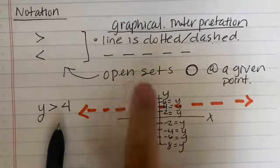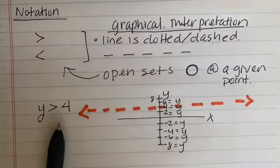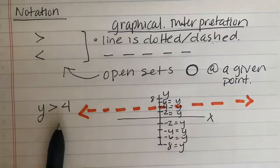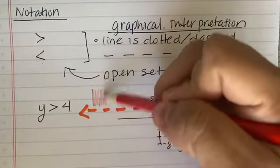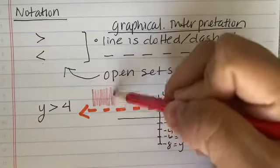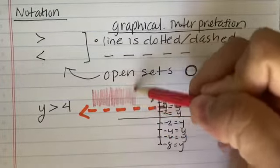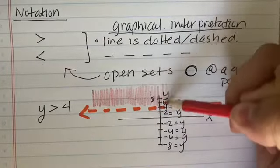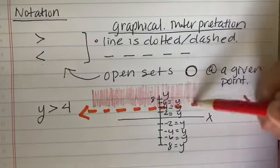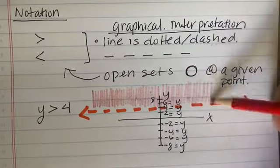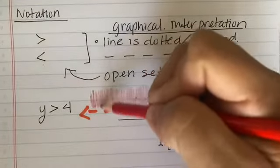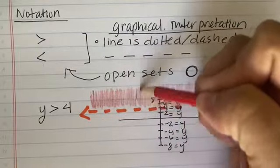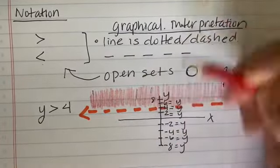This is an open set. What we do with this graph is we are going to shade. Because all the numbers above 4 are greater than 4 — it doesn't matter if it's an integer, a decimal, or a rational number — as long as it's above 4 or greater than 4, we're going to shade above.